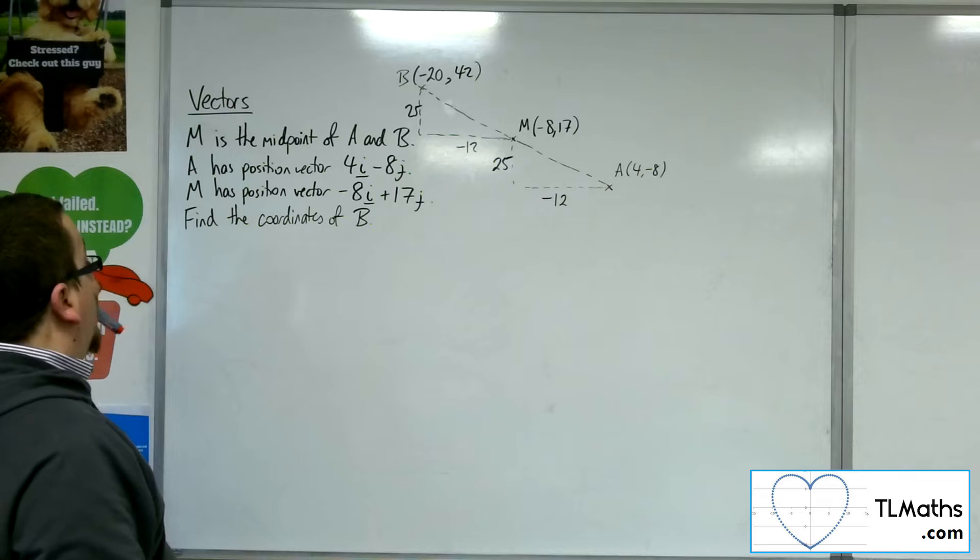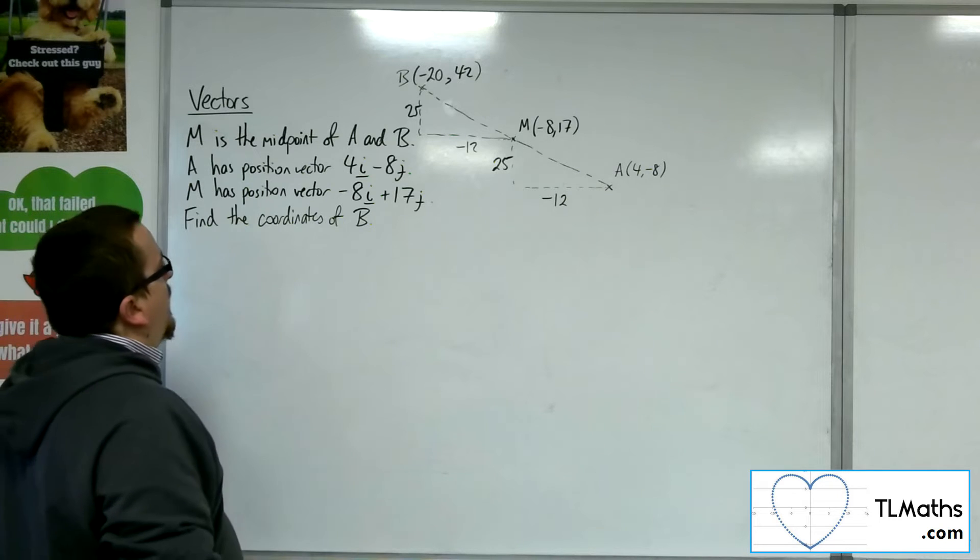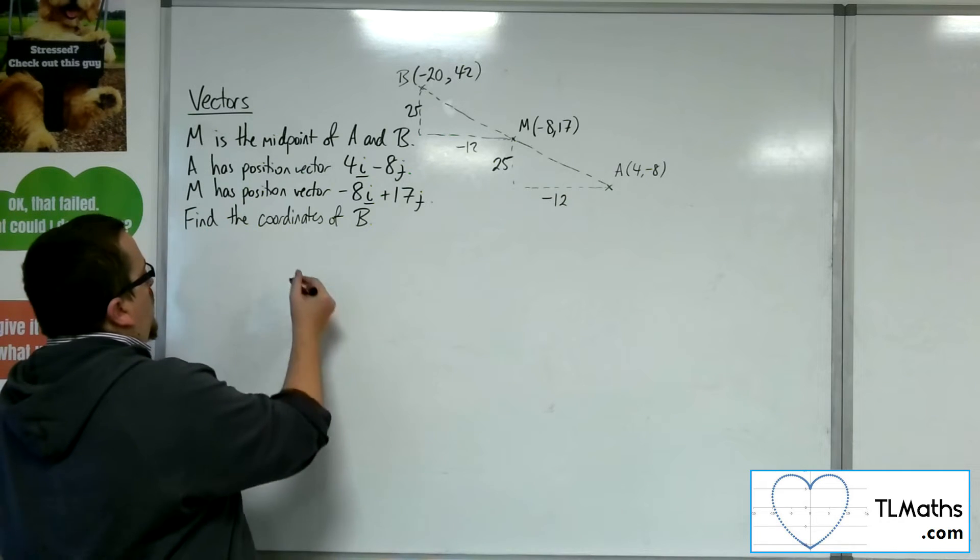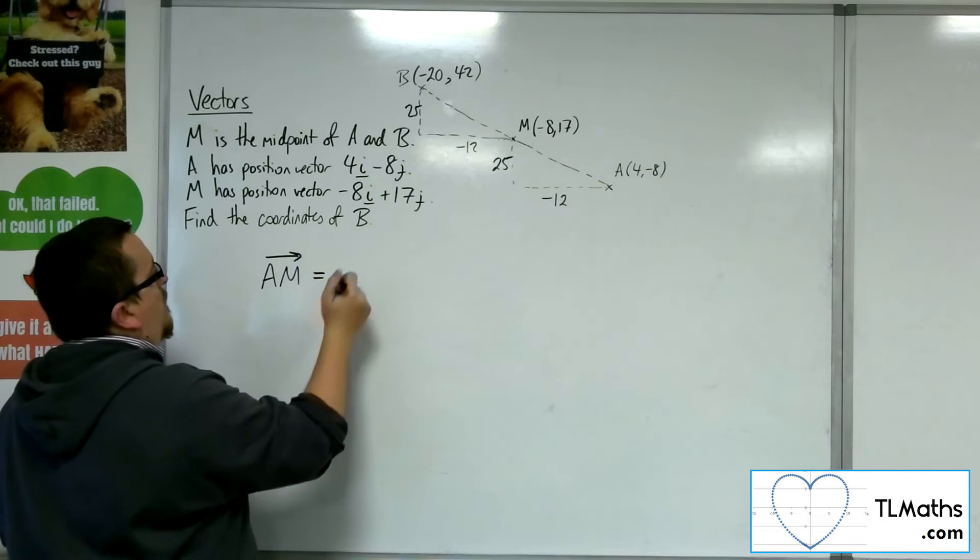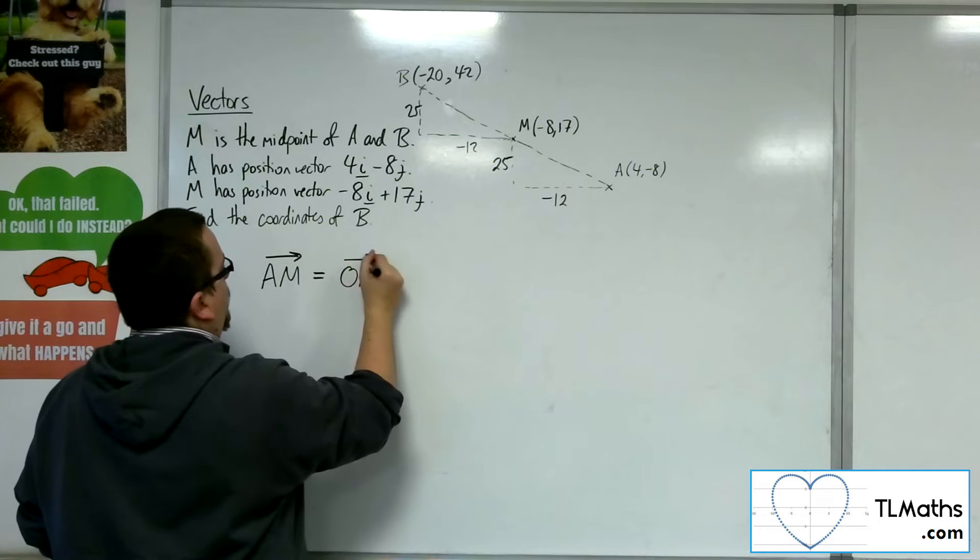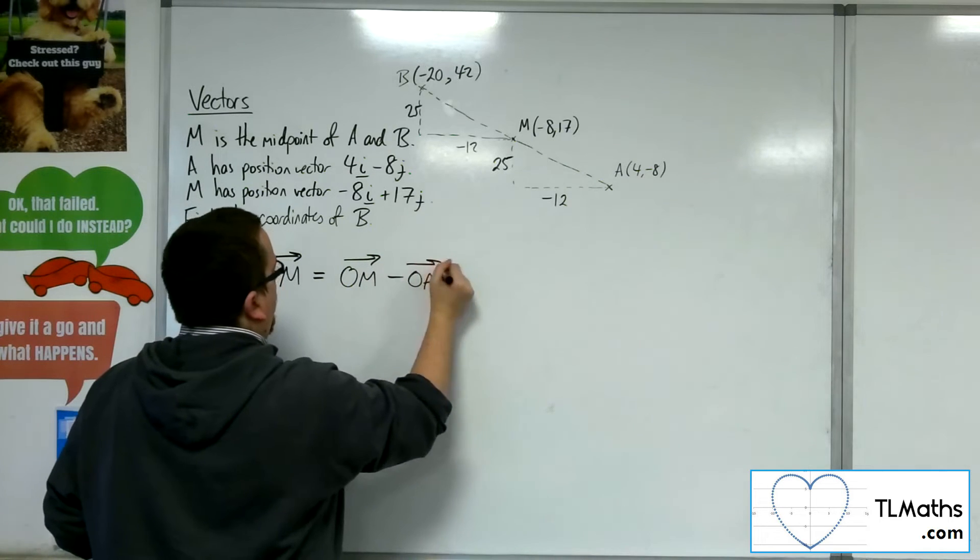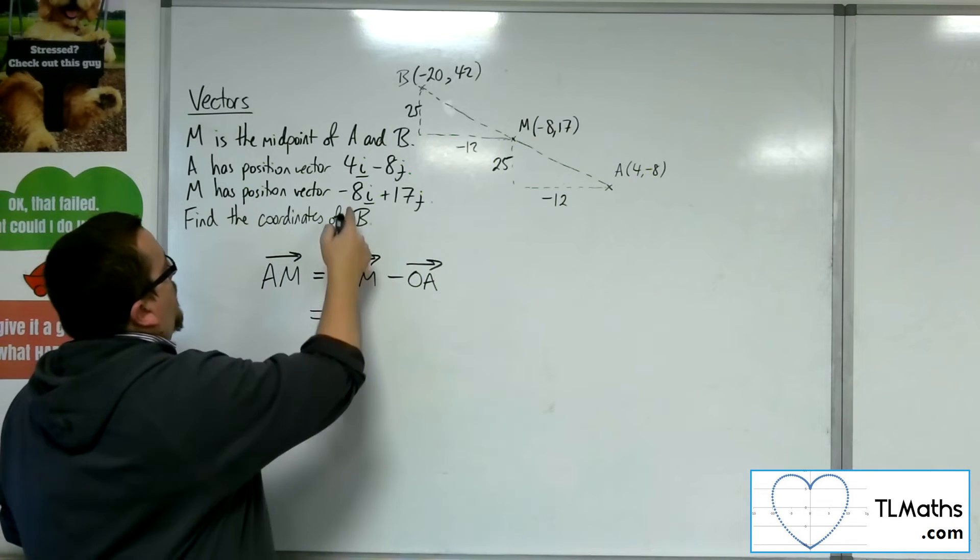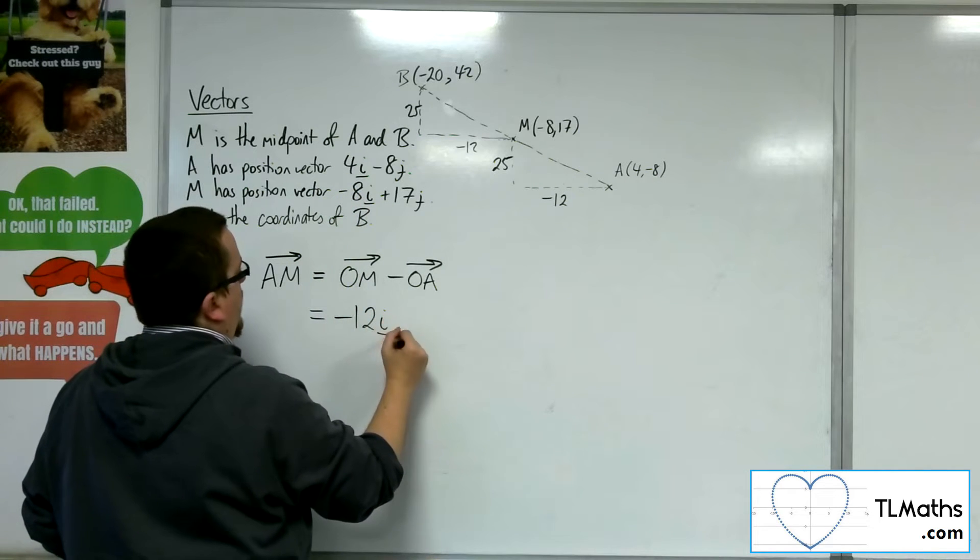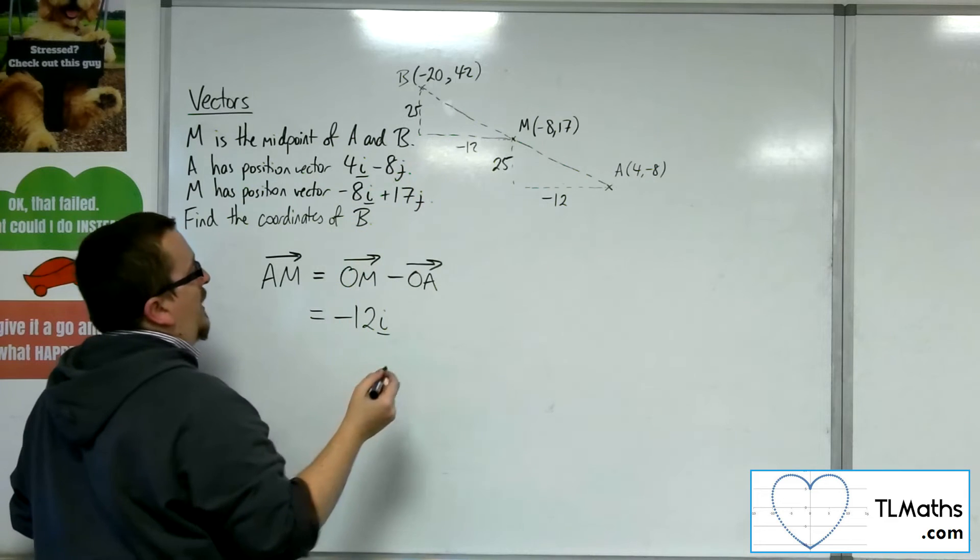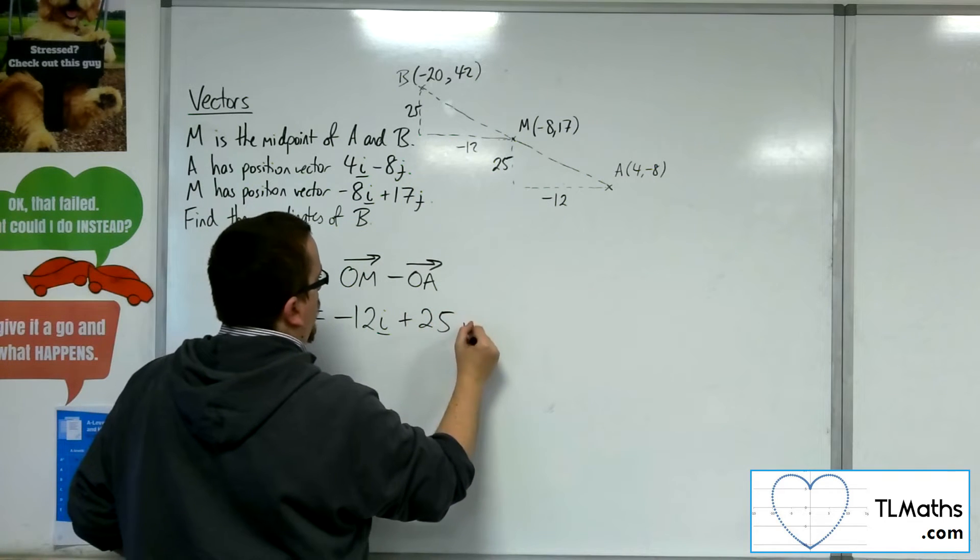Or you could think of this by thinking, well, OK, so the vector AM is OM minus OA. So that's minus 8, take away 4, so minus 12i. And 17 take away minus 8, so plus 25j.